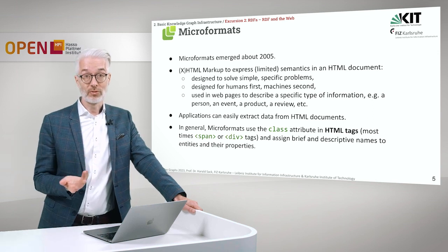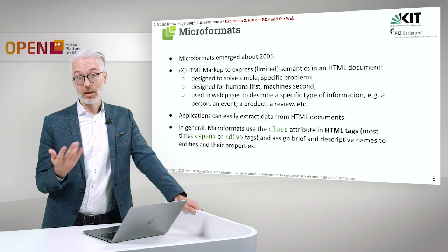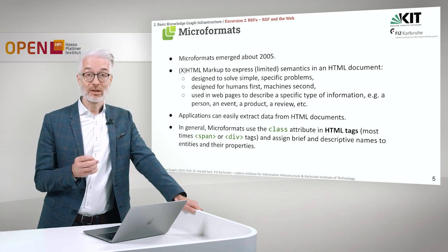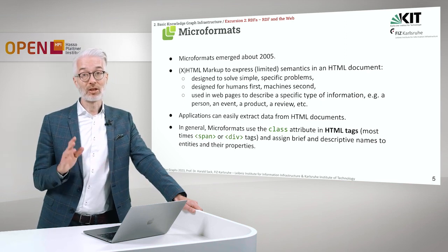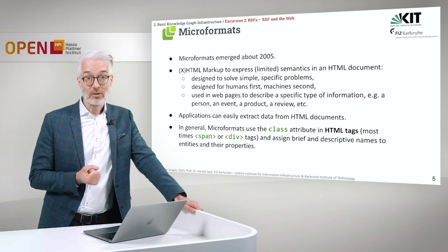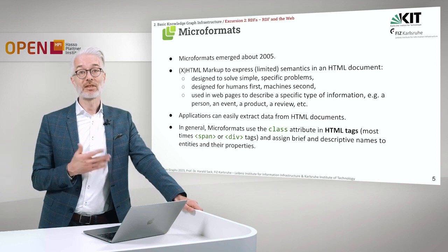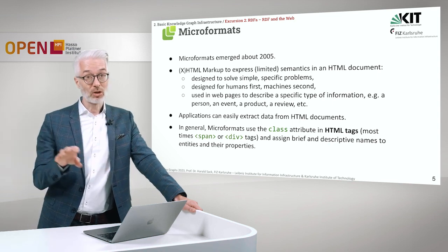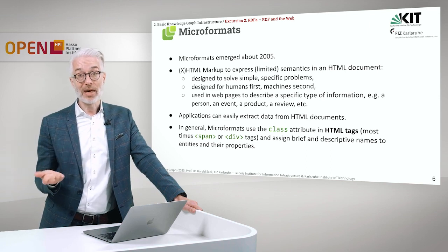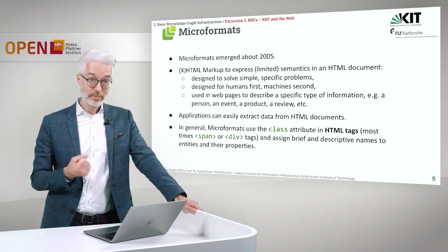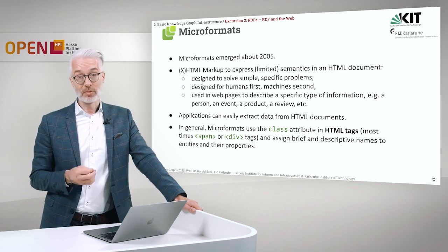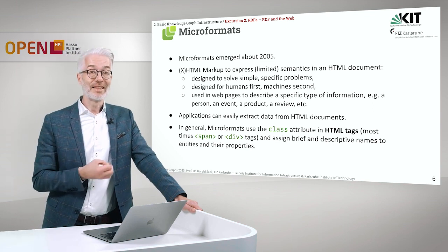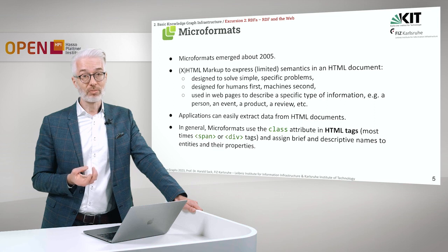We first look at microformats. Microformats emerged around 2005 and were first used for XHTML or HTML markup to express limited semantics within an HTML document. They were designed to solve rather simple problems — for example, to include address data in an address page. They were defined for humans first and machines second, so machine understanding was not the main purpose. You would use them to describe specific types of information such as a person's address, dates for an event, a product, or a product review.